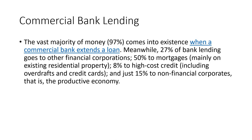It's not when people just spend money — it's when they extend a loan. Meanwhile, 27% of bank lending goes to other financial corporations, 50% to mortgages mainly on existing residential property, 8% to high-cost credit including overdrafts and credit cards, and just 15% to non-financial corporates — that is the productive economy. This moves around depending on the residential real estate market and housing starts. That 50% can float between 50% and 70% depending on where we are in the cycles.